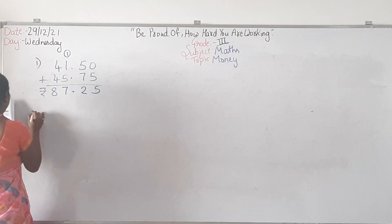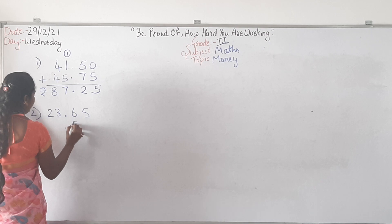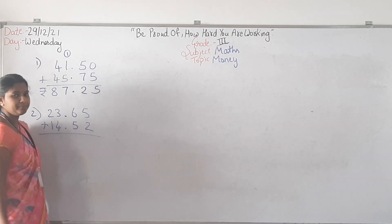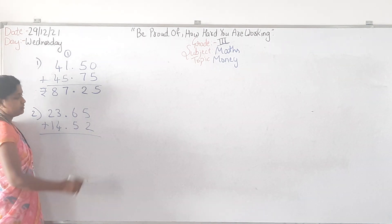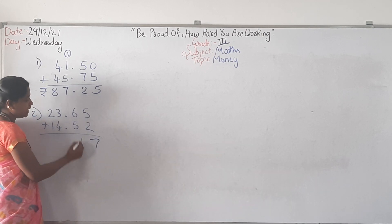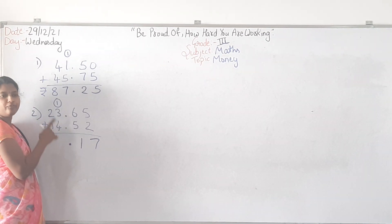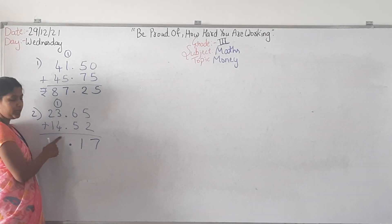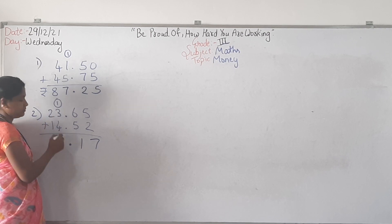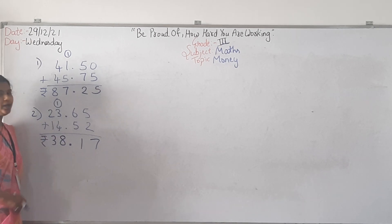One more problem. 23.65 plus 52.4 plus 1. 5 plus 2? 6 plus 5 is 11 — write 1 here, 1 carry. Before you add, after the point here, you have to put the point here. 1 plus 3 is 4. 4 plus 4 is 8. 2 plus 1 is 3. So the answer is rupees 38.17.